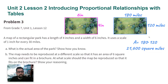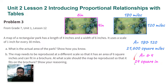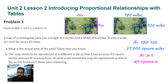Part B: the map needs to be reproduced at a different scale so that it has an area of six square inches and can fit in a brochure. At what scale should the map be reproduced so that it fits on the brochure? Show your reasoning. We need to make a smaller version of this map. First, I'm calculating the area of the original scale drawing: six times four — length times width — so the scale drawing has an area of 24 square inches.